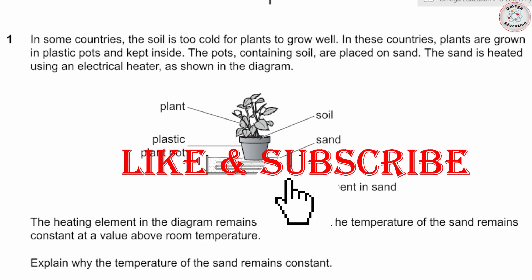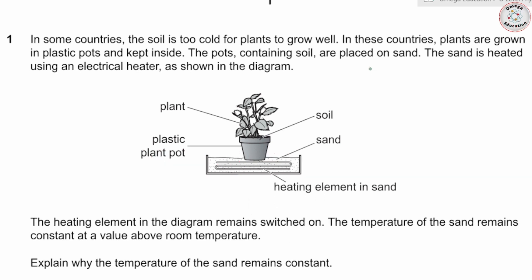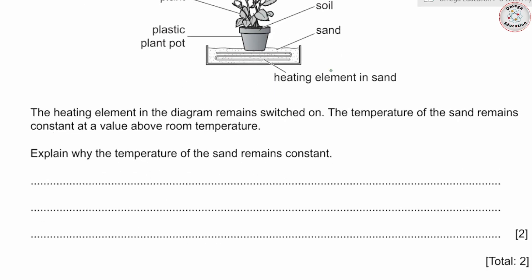Alright, so once again the review for thermophysics, starting with the first question. The statement is: in some countries the soil is too cold for plants to grow well. In these countries, plants are grown in plastic pots and kept inside. The pots containing soil are placed on sand, and the sand is heated using an electrical heater as shown in the diagram. The temperature of the sand remains constant at a value above room temperature, such as 40 or 50 degrees centigrade.